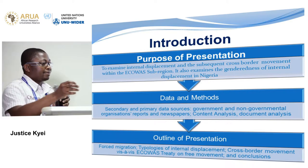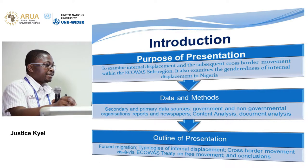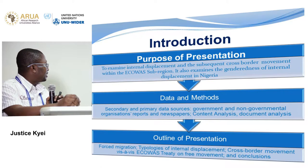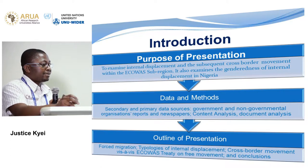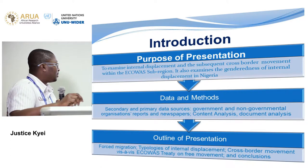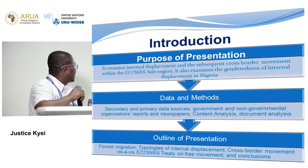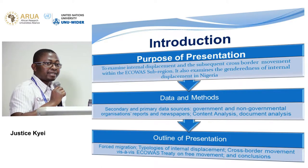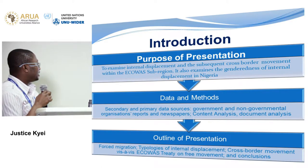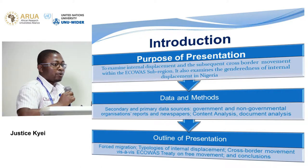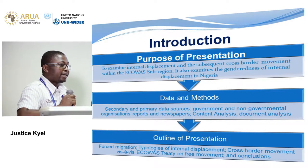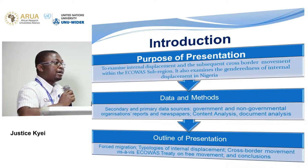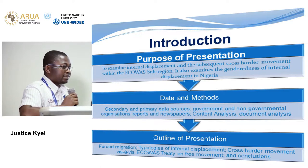The data draw mainly from secondary and primary data sources, including government and non-governmental reports and newspapers. For methods, we are using content analysis and document analysis. The outline covers forced migration and establishes the different typologies of internal displacement and cross-border movement vis-à-vis the ECOWAS treaty of 1979, examining how it relates to internal displacement and the cross-border movement of internally displaced persons.